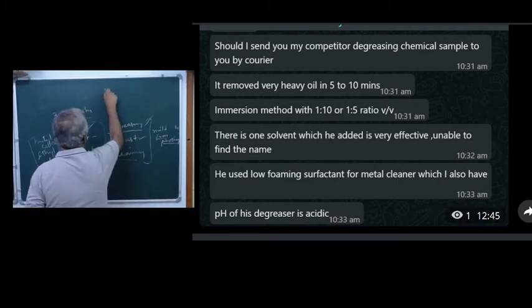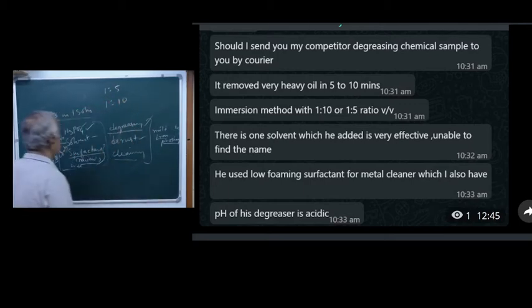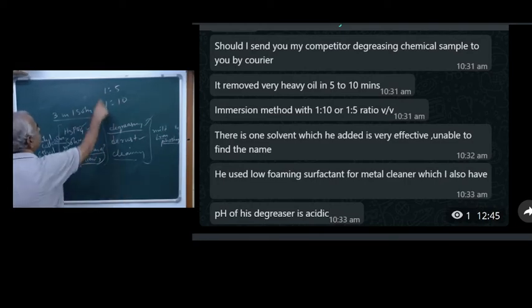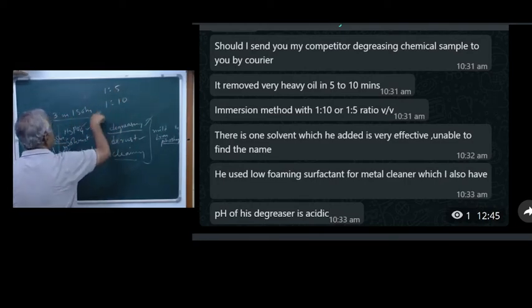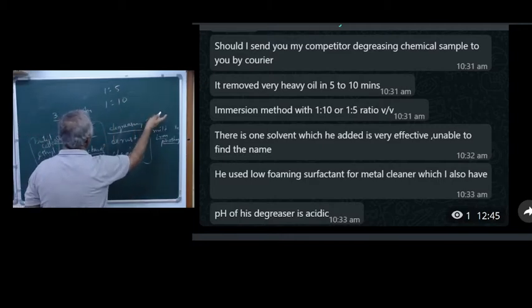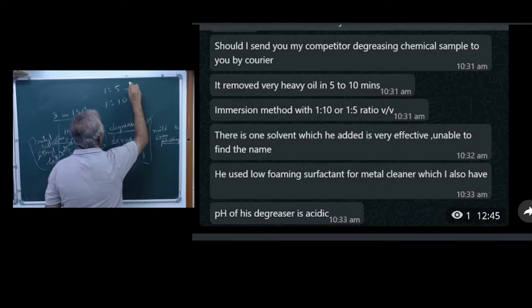You can take one part and five parts - this is a recommended ratio. Otherwise, if it is less severe, you can take 1:10 also. That is one part of the solution and five parts of water, or one part of solution and ten parts of water. So 1:5 or 1:10, this is for strong reaction.